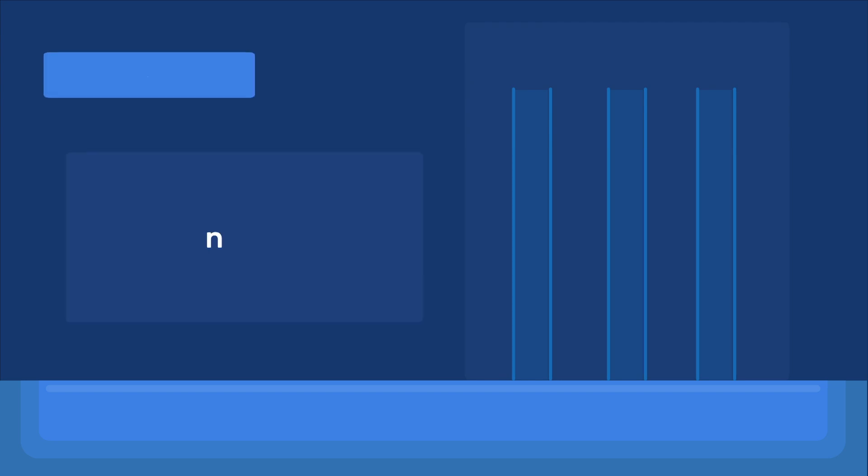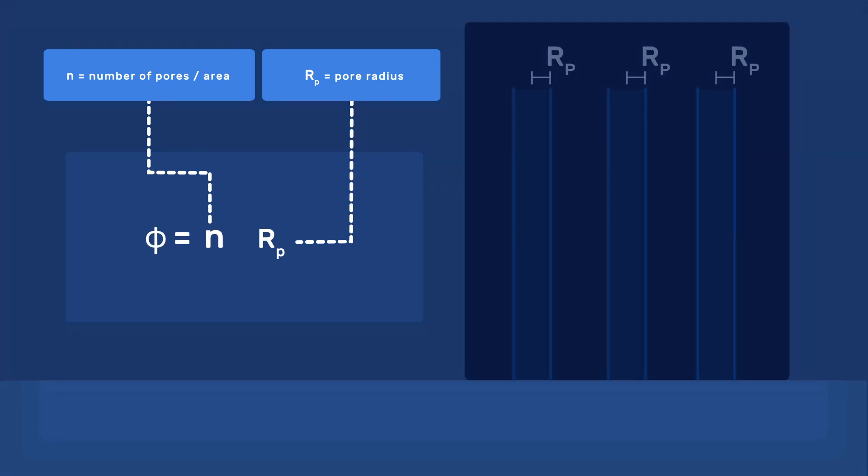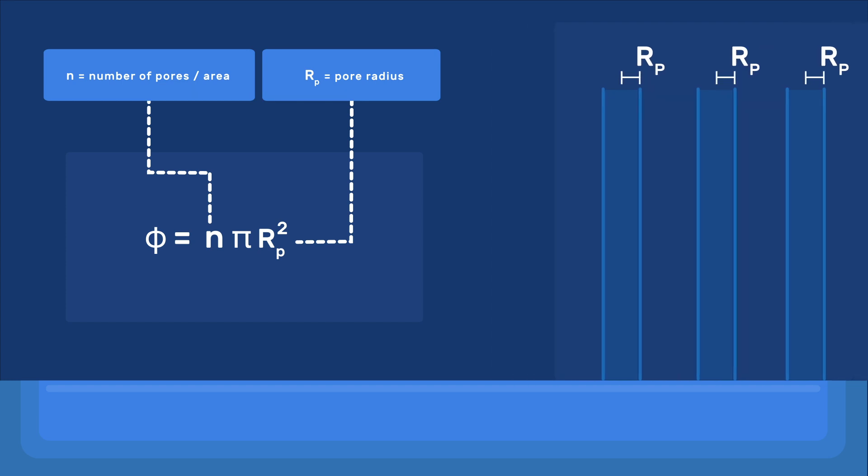Consider a model porous material with parallel vertical cylindrical pores whose base is in contact with water. If there are n such pores per unit area of the base, and the radius of each pore is rp, the porosity of the body is phi equals n times pi times rp to the power 2.